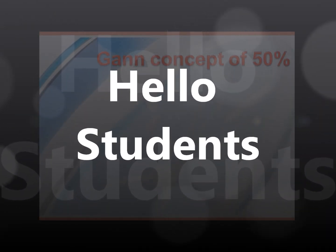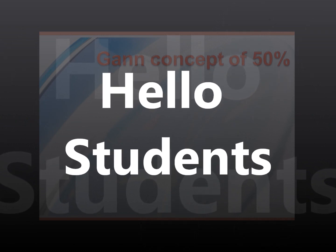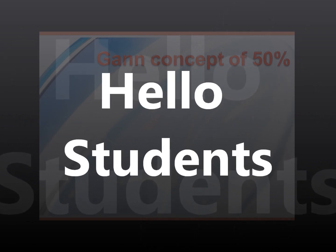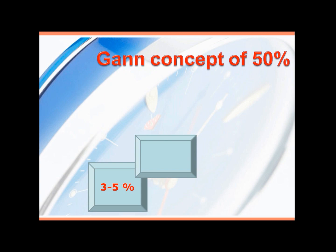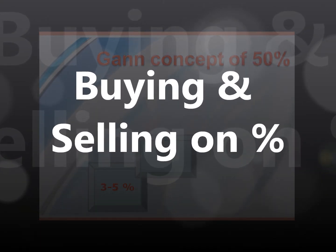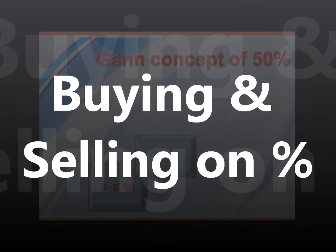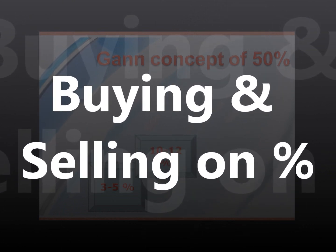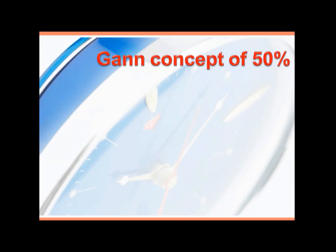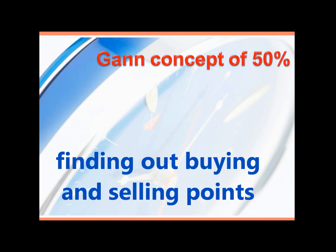Hello students. W.D. Gann has mentioned about buying and selling on percentages in one of his books. Rule number three: he has mentioned to buy and sell on a 50 percent decline from any high level, or a 50 percent advance from any low level, so long as these reactions or rallies are with the main trend. You can use the percentage of individual stocks as well as the percentage of averages to determine the resistance levels and the buying and selling points.